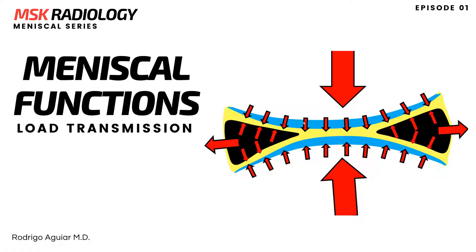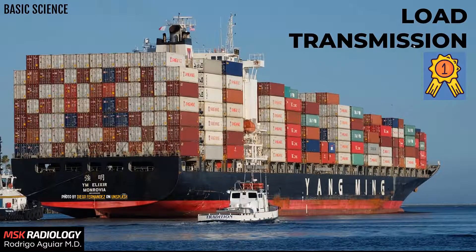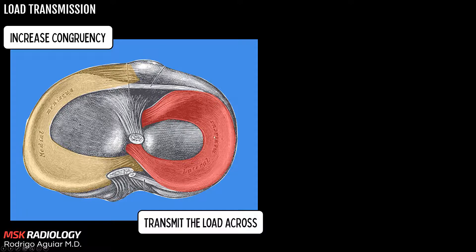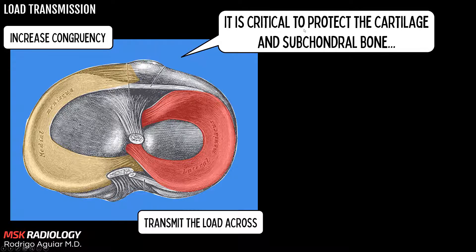So let's start with the most important meniscal function: the load transmission. The menisci are crescent-shaped fibrocartilage structures that enable effective articulation between the femoral condyles and the flat tibial plateau. They increase the articular congruency and help to transmit the load across the joint, and it's critical to protect the articular cartilage and the subchondral bone.